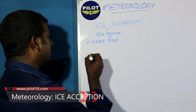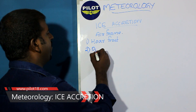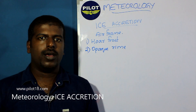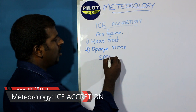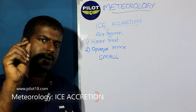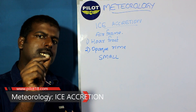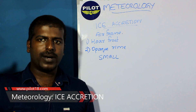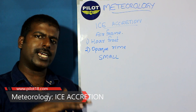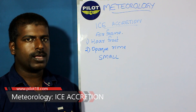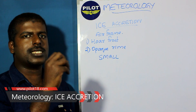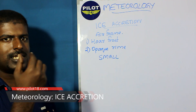Then comes opaque rime icing. This occurs when small, super-cold water droplets — drizzle-sized — hit the aircraft body while it is passing through clouds of around 0 to minus 7 degrees Celsius, just below the freezing level. The droplets will stick on the aircraft and instantly become ice.